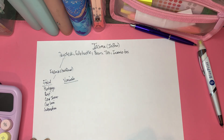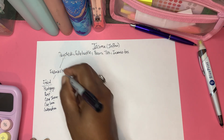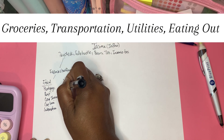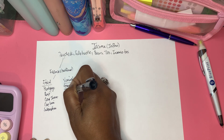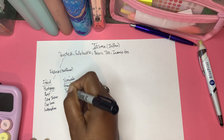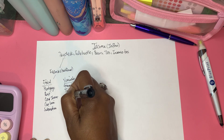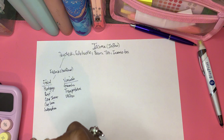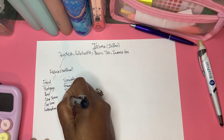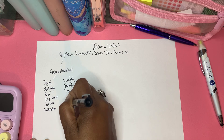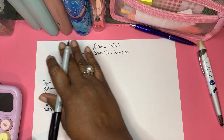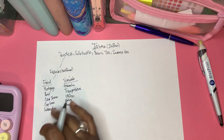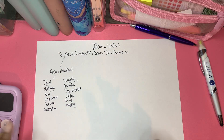Then we have variable expenses. These could be your groceries, transportation, utilities, eating out, and shopping. That's just a few examples of variable expenses. So you want to break your budget out with income, then your fixed expenses, and then your variable expenses.